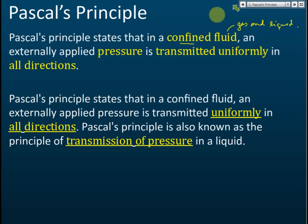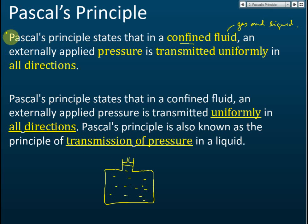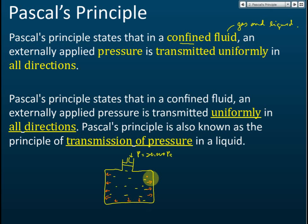For example, we have a container with a piston, and the inside is full of liquid. If you apply a pressure of 20,000 Pascals to the liquid, this 20,000 Pascals will be transmitted uniformly in all directions. Every part inside the liquid will experience an extra 20,000 Pascals of pressure. That is what is meant by Pascal's Principle.